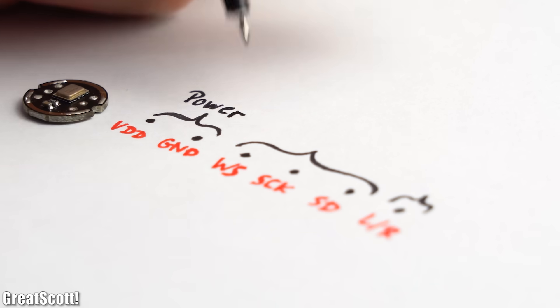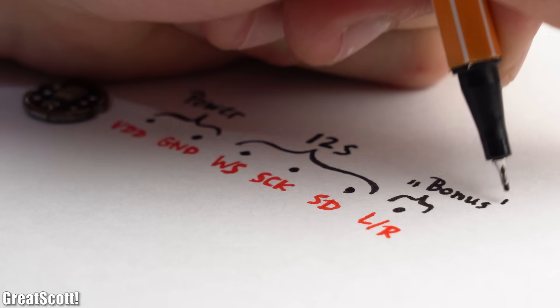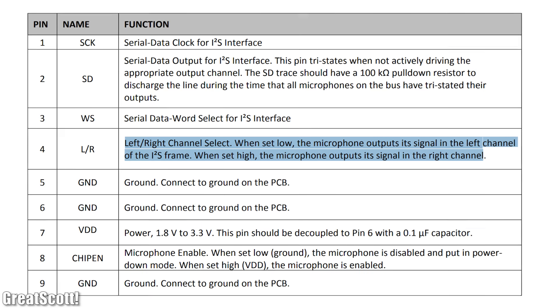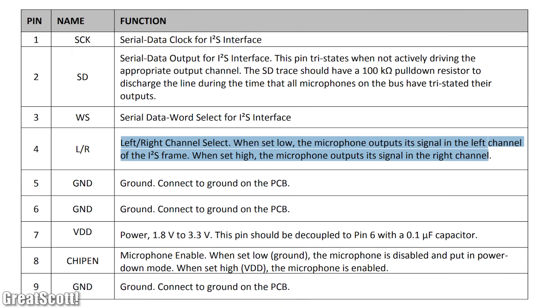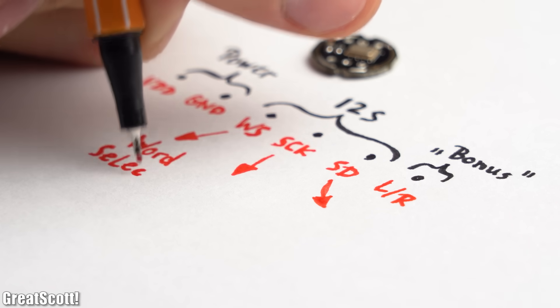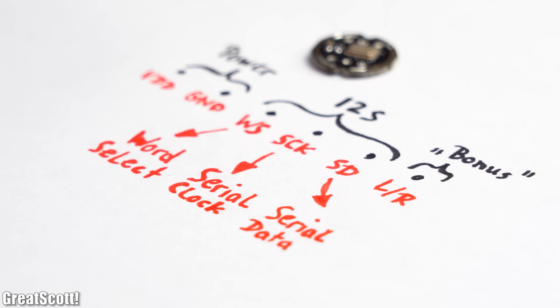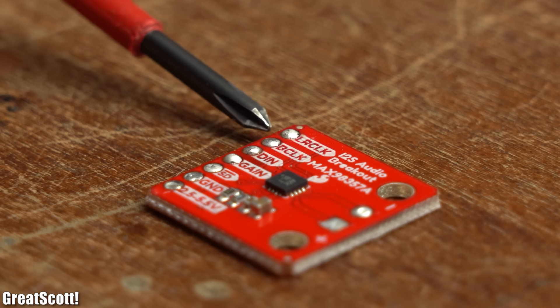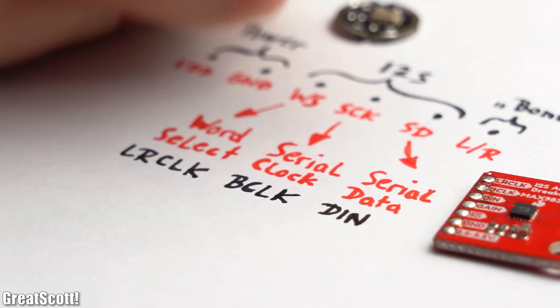Of which 2 are for power, 3 are for the I2S interface, and one is kind of a bonus to select whether the microphone outputs its data on the left or right channel. The 3 pins required for the I2S are called Word Select, Serial Clock, and Serial Data. In the case of the amplifier board later on they feature slightly different names but still mean the same thing.